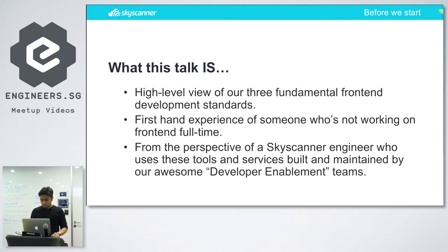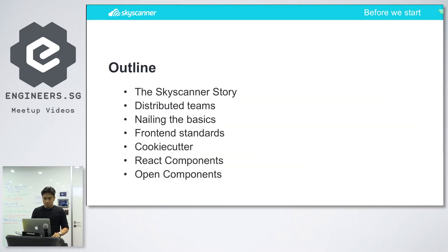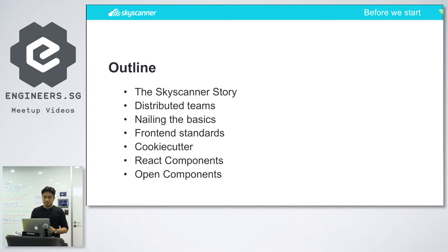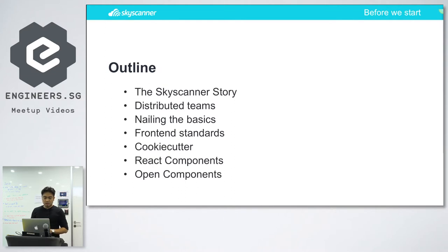The outline of this talk: first, I'd like to share the story of Skyscanner — the growth we've experienced over the years. With that growth, the team grew as well and we ended up with distributed teams across different countries and regions. I'd also like to share what else we did to make sure we keep the business running while delivering quality products regularly — things outlined from nailing the basics all the way through to front-end standards. I'll show some demos and walk you through some of the technical aspects.